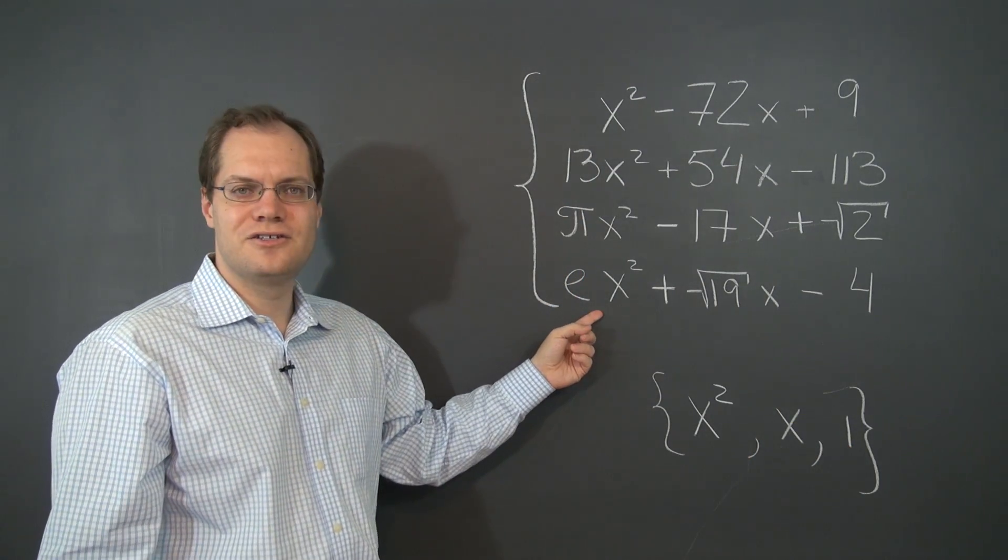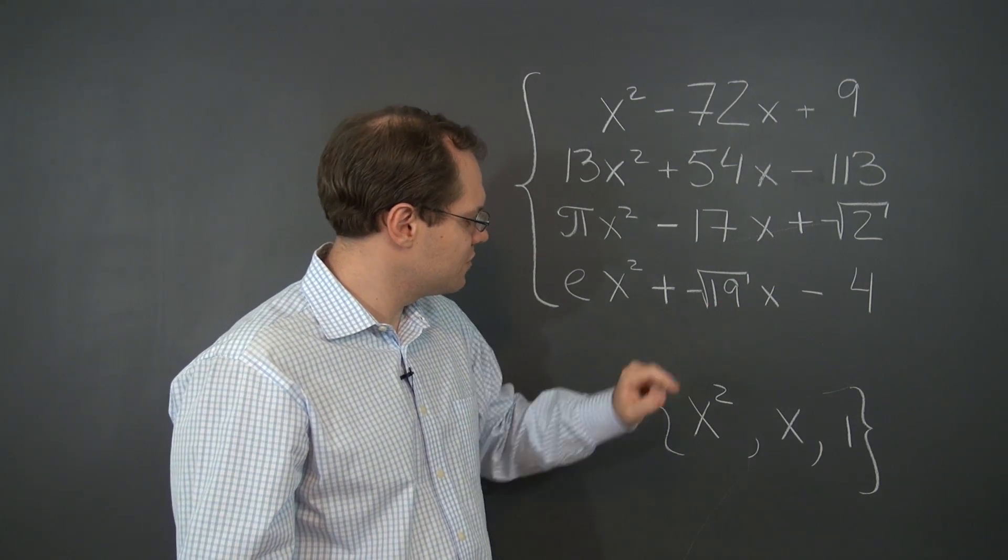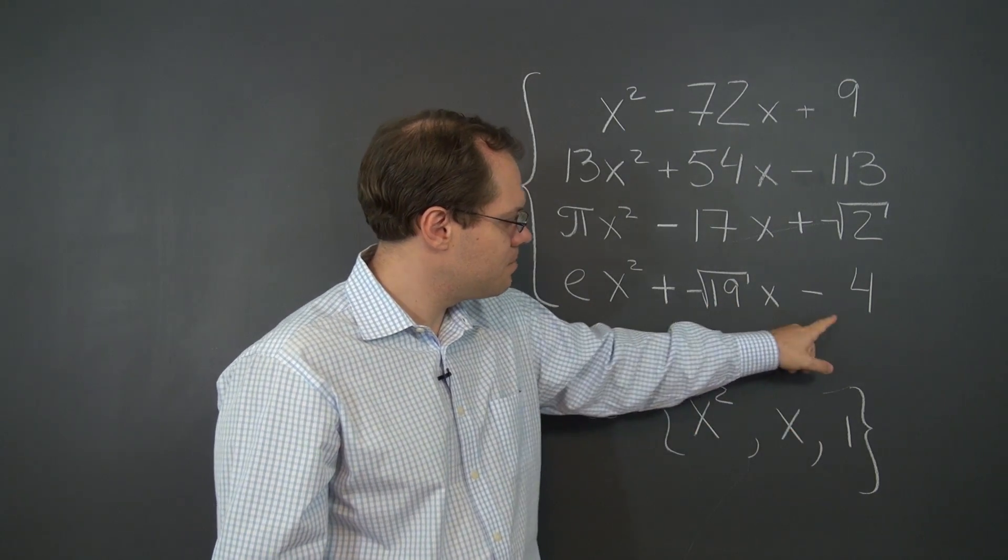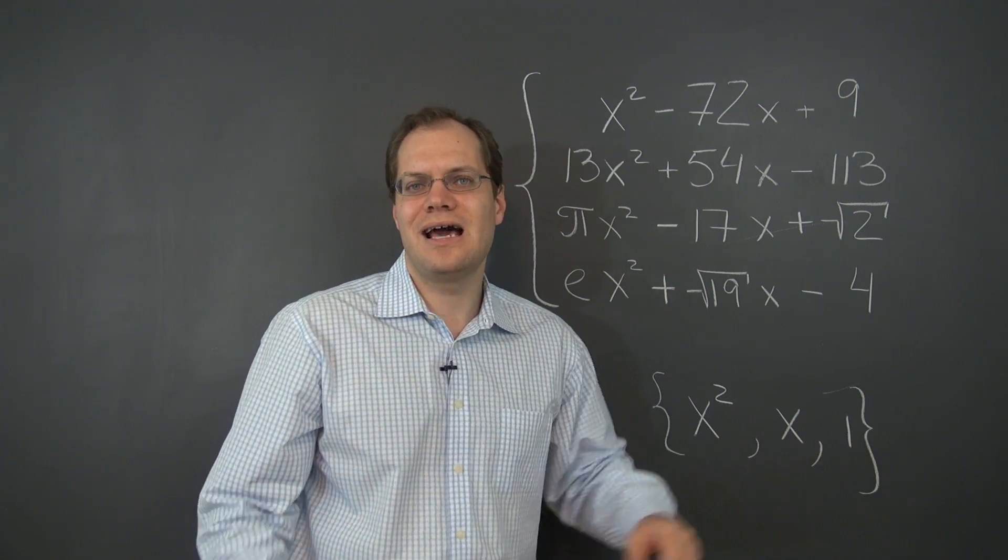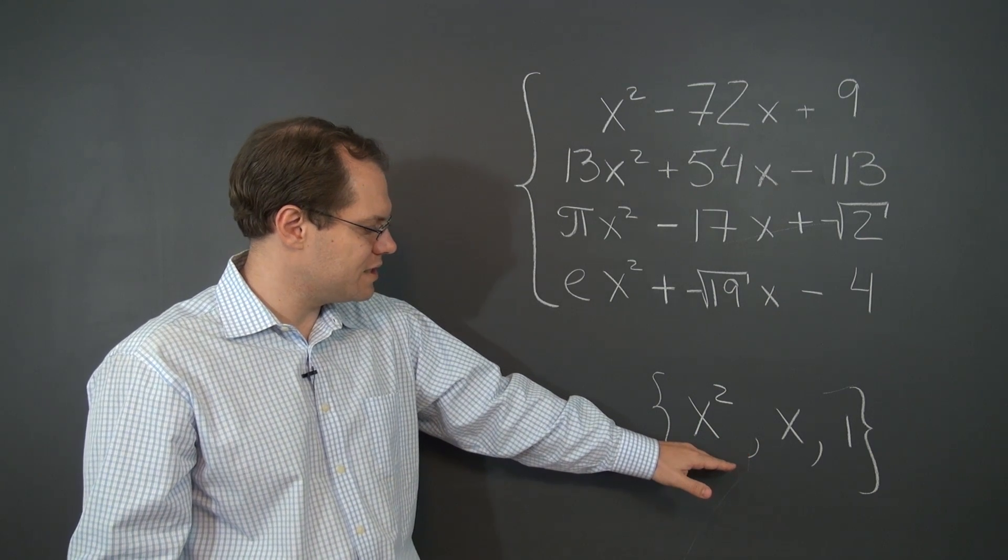Let's do this one. Just as easy. E of this element, whatever E is, square root of 19 of this element minus 4 of this element. And it's clear that any other quadratic polynomial can be expressed as a linear combination of these vectors.